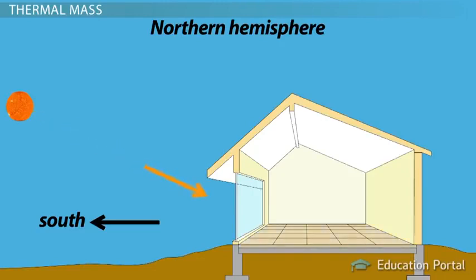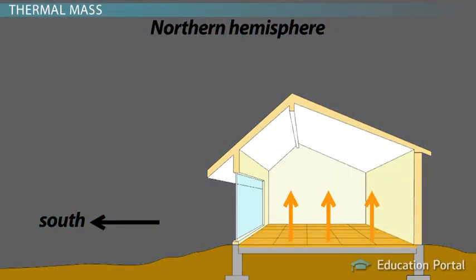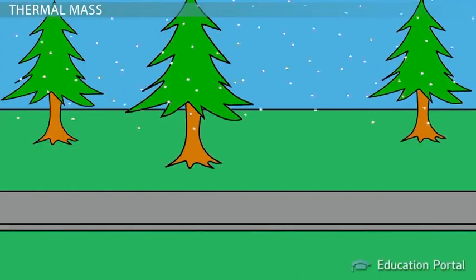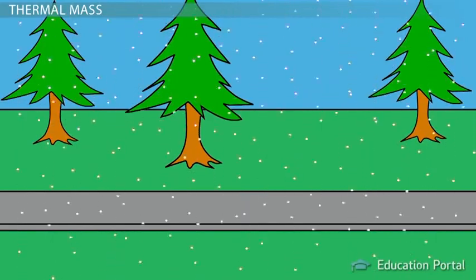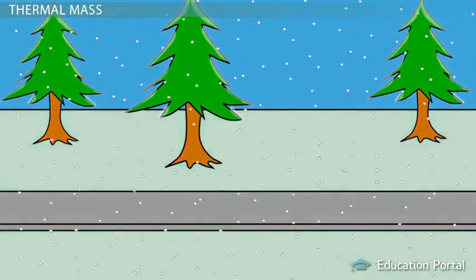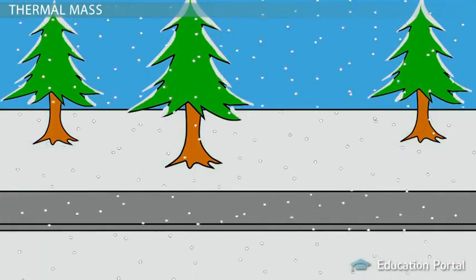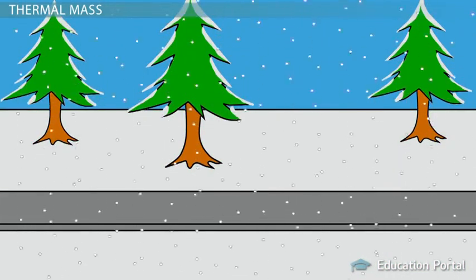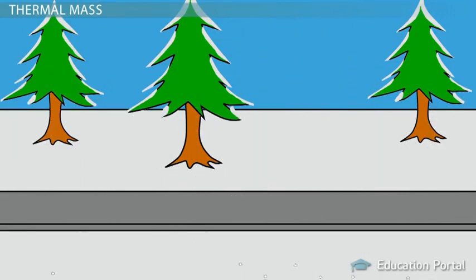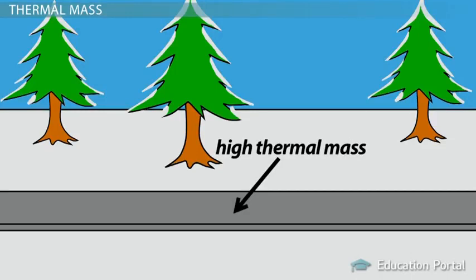These materials absorb and hold on to heat during the period of time that the Sun is shining. Then, slowly release that heat throughout the nighttime, keeping the home at a more stable and comfortable temperature. If you live in a climate that has regular snowfall each year, you can get a good idea of how thermal mass works by thinking about the first snowfall of the season. What you likely notice is that the snow easily melts on the road surface, but it clings to the grass and the trees. This is because the dense material that makes up the road has a high thermal mass and it has held on to the Sun's heat, causing the snow to melt on contact. The grass and trees are less dense and have a low thermal mass, so the snow does not melt.